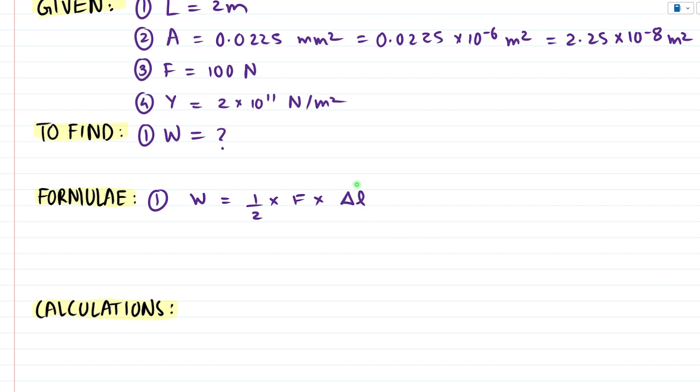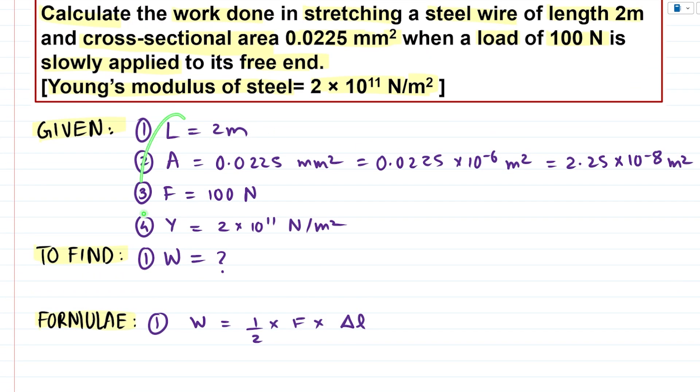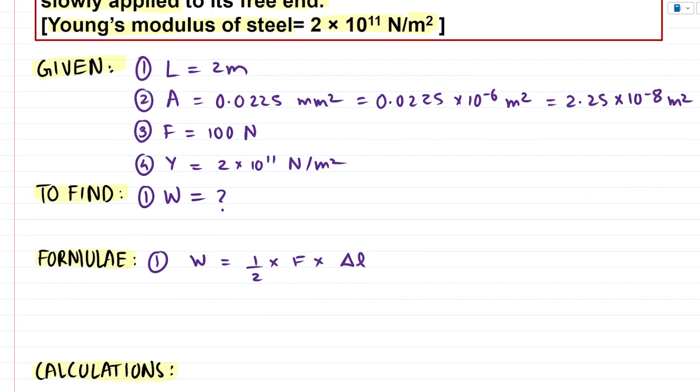But if you notice that given we have no information about delta L. But we can calculate delta L as F × L divided by A × Y, where F is force, L is length of the wire, area cross sectional A, and Young's modulus is Y.